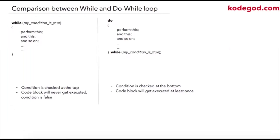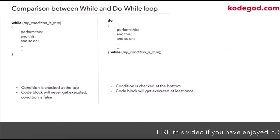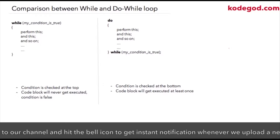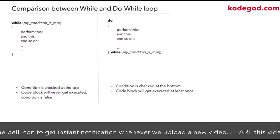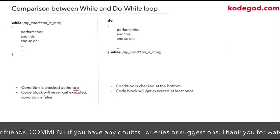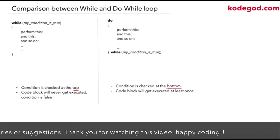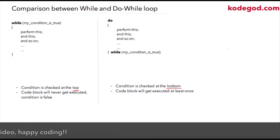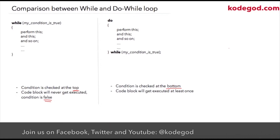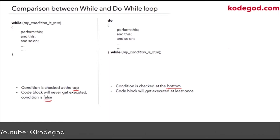Why do we need two different loops — do-while and while loop? The basic differences are: in a while loop, the condition is checked at the top, whereas in a do-while loop, the condition is checked at the bottom of the code block. In a while loop, the code block will never get executed if the condition is false. However, in a do-while loop, even if the condition is false, the code will get executed at least once.